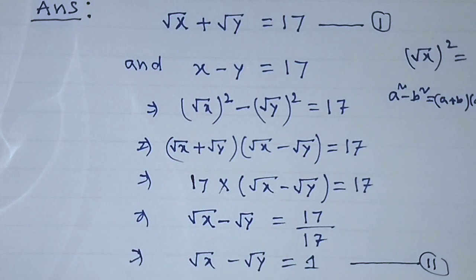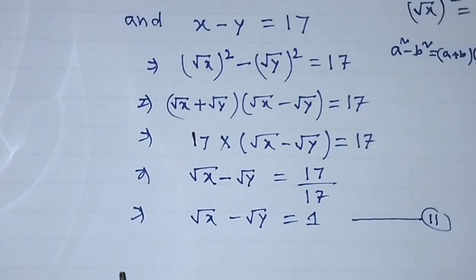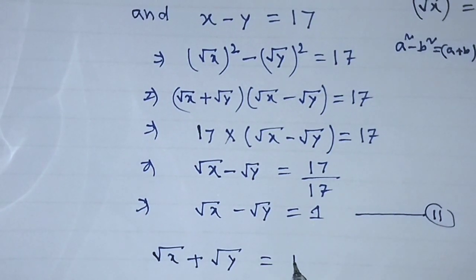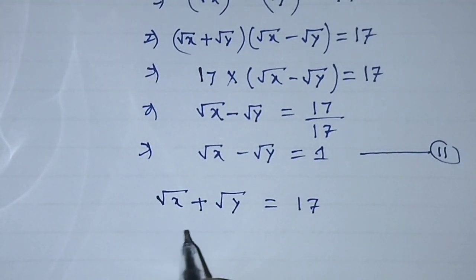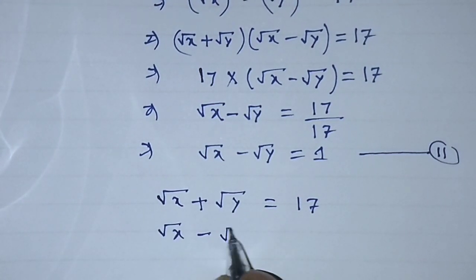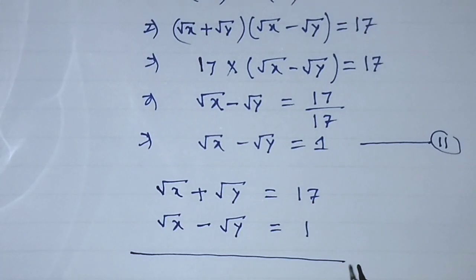This is equation number 2. To find the value of x and y from these two equations, we apply the elimination method. So we now have: equation 1 — root over of x plus root over of y equals 17, and equation 2 — root over of x minus root over of y equals 1. We add the left hand side and right hand side of both equations.